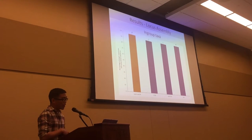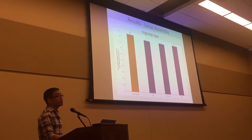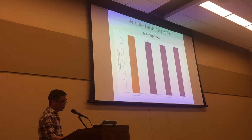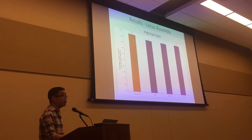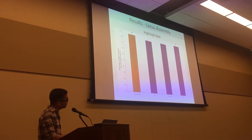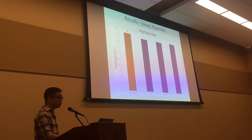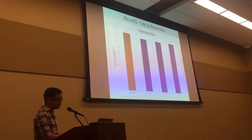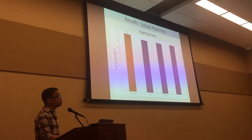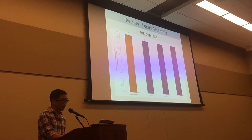Looking at how many loci were assembled in each set: this graph shows the percentage of target loci with an assembled sequence in each set for the ingroup taxa, the Buddleja species. The average was close to 100% in each set, though it was slightly but significantly higher for the taxon-specific and PPR sets.